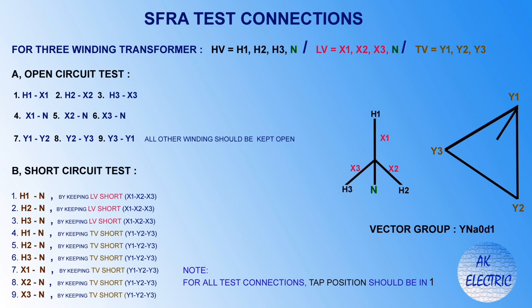For a three-winding transformer: HV and LV sides are in star connection and TV side is in delta connection, with a common neutral for HV and LV. For the open circuit tests, nine combinations are tested: H1 to X1, H2 to X2, H3 to X3, X1 to neutral, X2 to neutral, X3 to neutral, Y1 to Y2, Y2 to Y3, and Y3 to Y1 — with all other windings kept open. For short circuit tests with LV shorted: H1 to neutral, H2 to neutral, H3 to neutral. With TV shorted: H1 to neutral, H2 to neutral, H3 to neutral, X1 to neutral, X2 to neutral, X3 to neutral. Tap position should be at one for all tests.